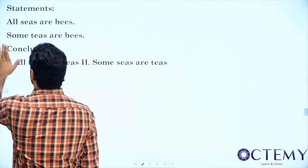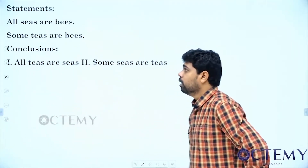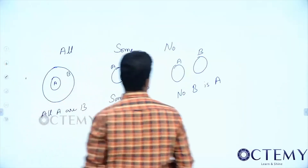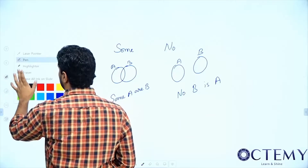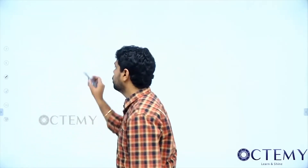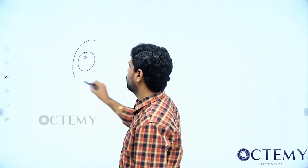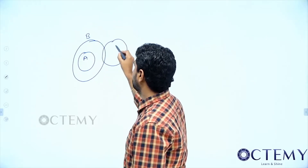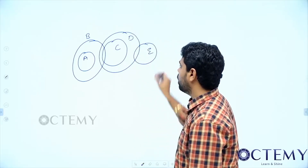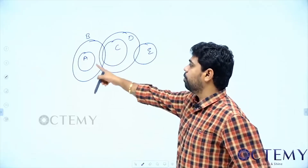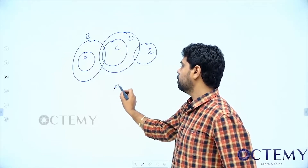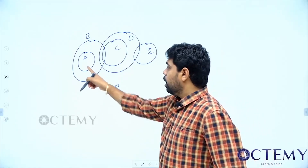Now we will see some logic practice. Suppose this is A, this is B, C, D, E — nested circles. I want you to tell the relation between A and everyone else. From A with respect to B: all A are B.